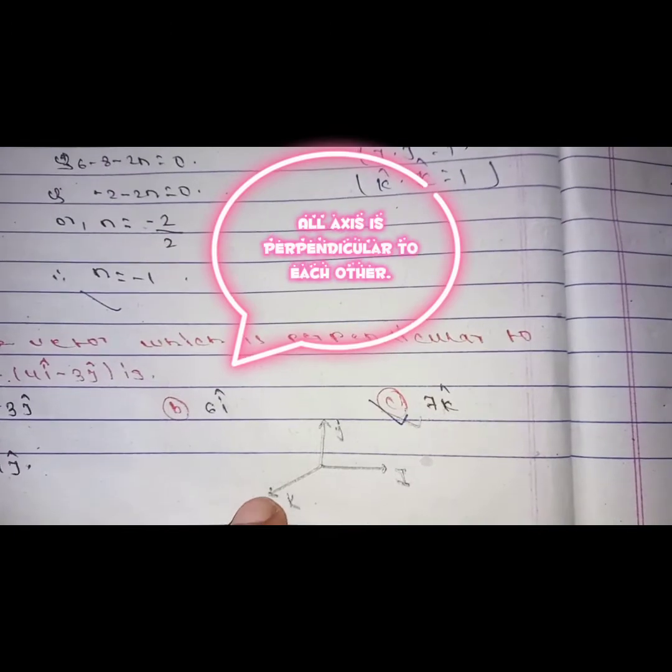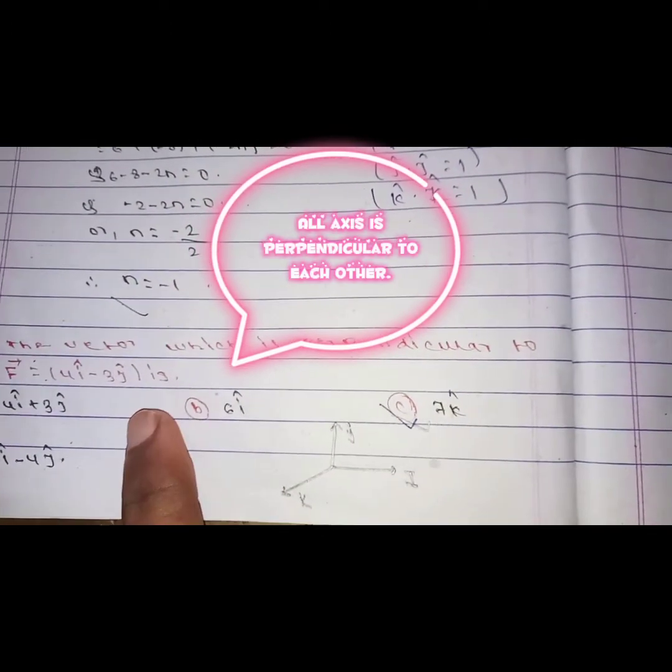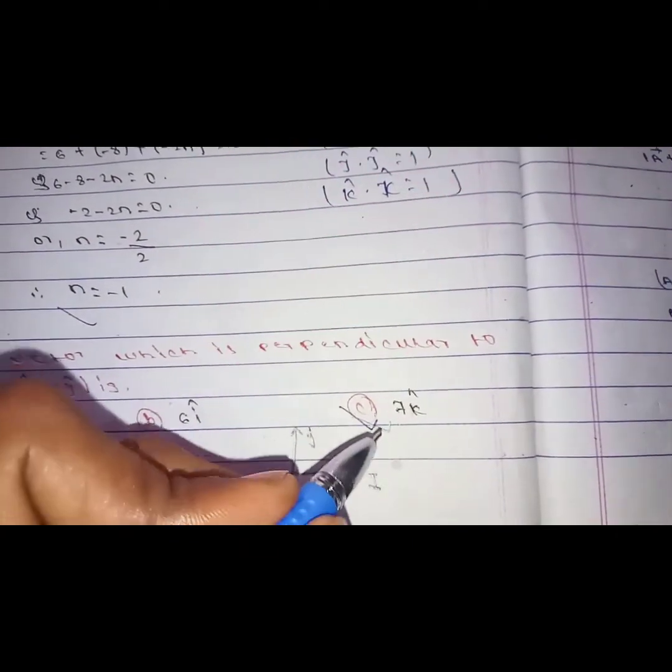Therefore, the question: the vector which is perpendicular to f, perpendicular to f, is nk. Well done.